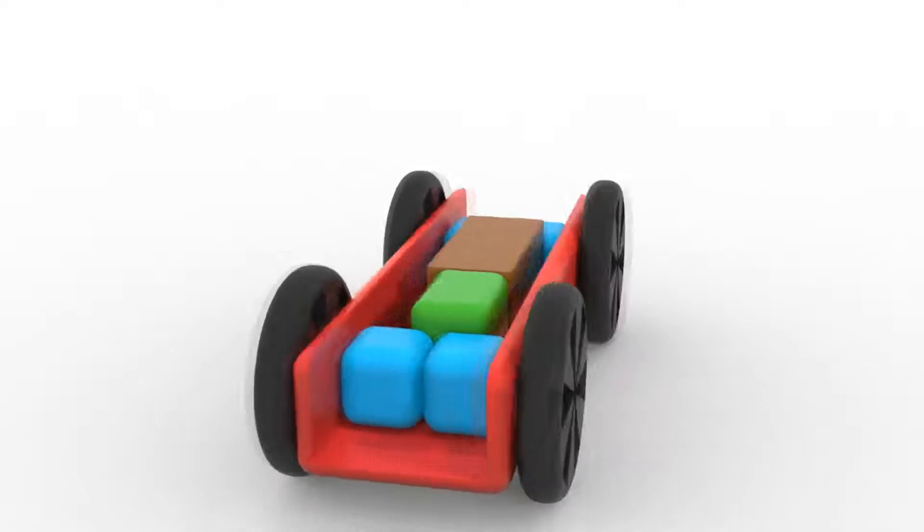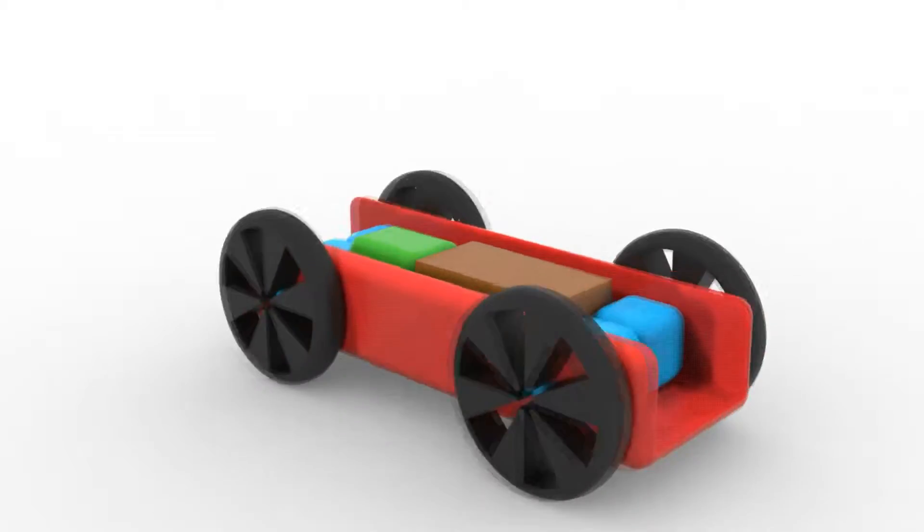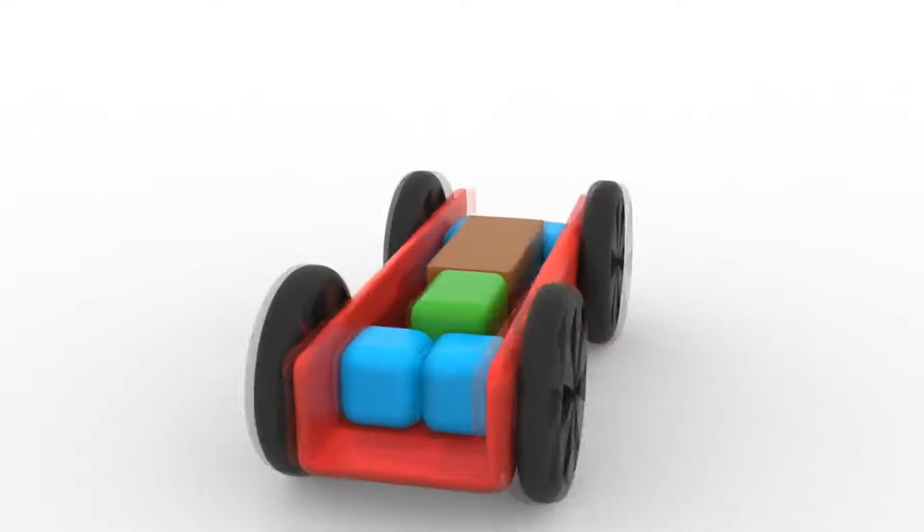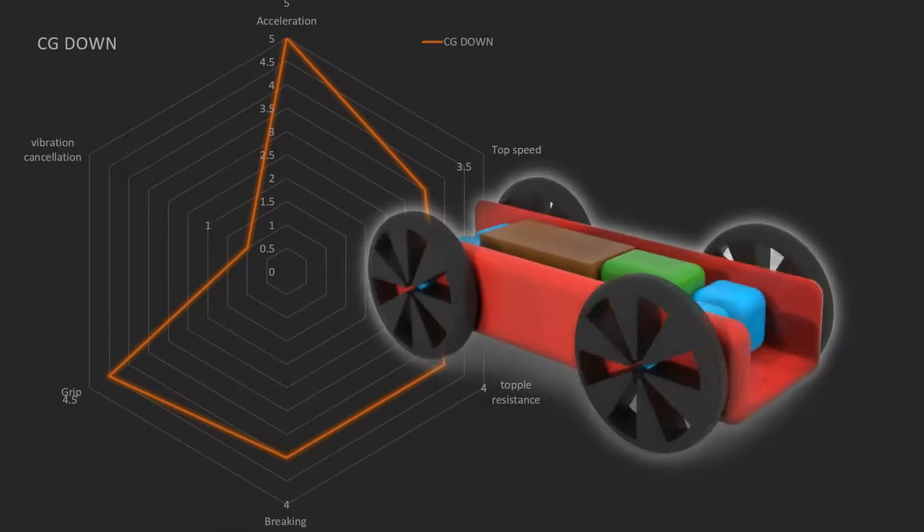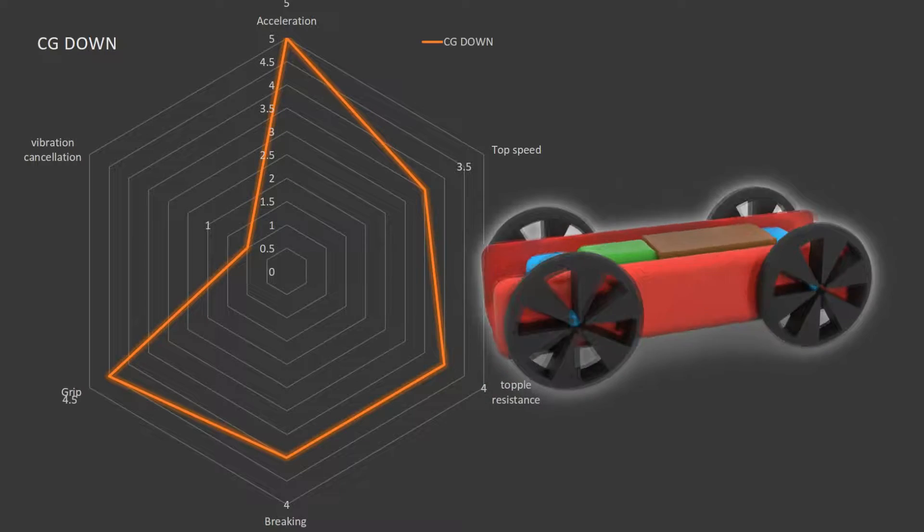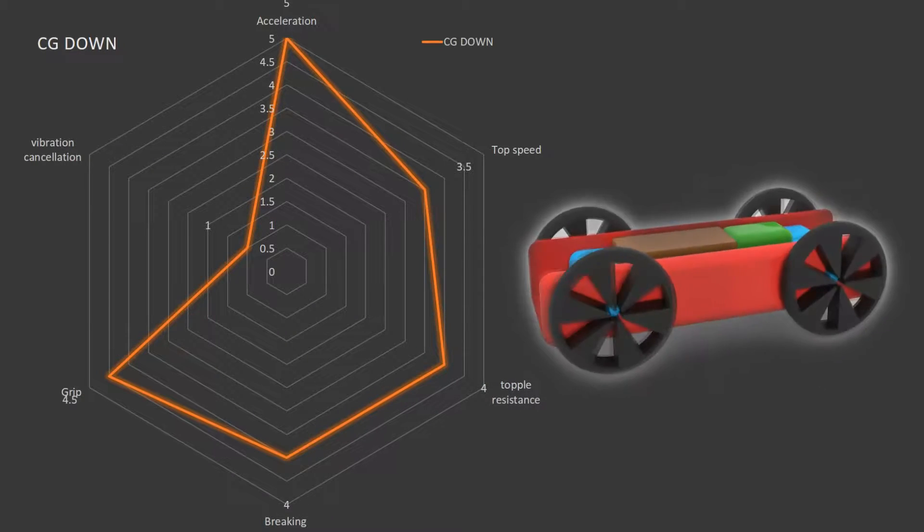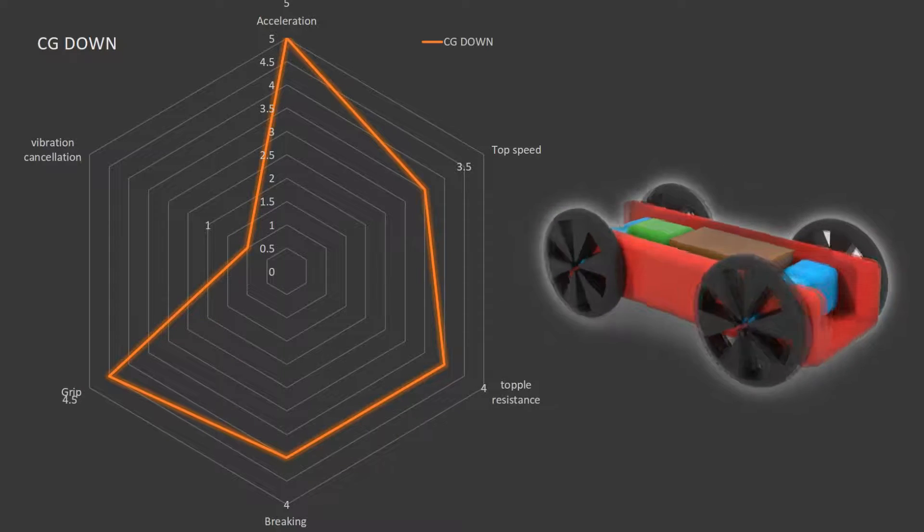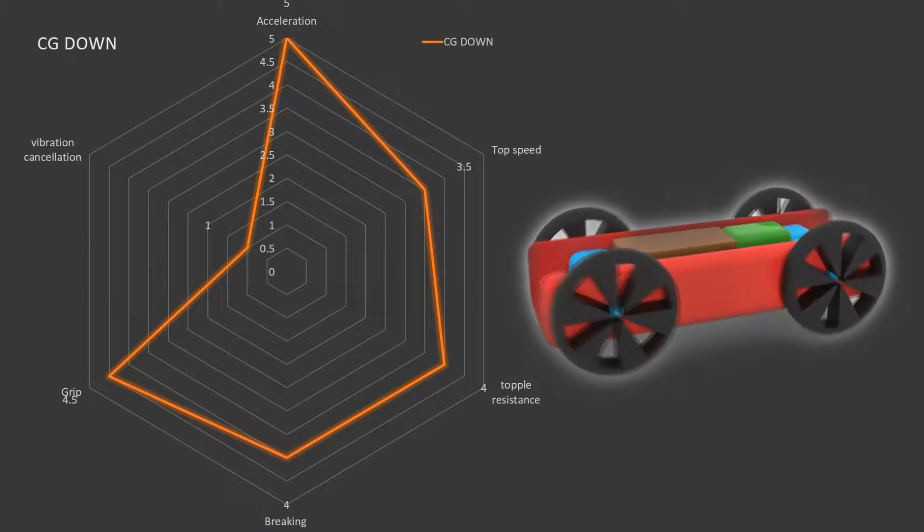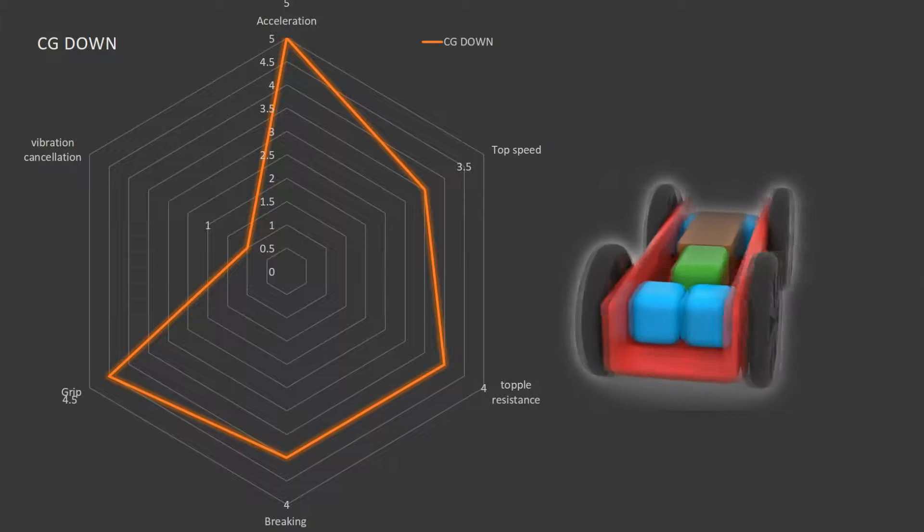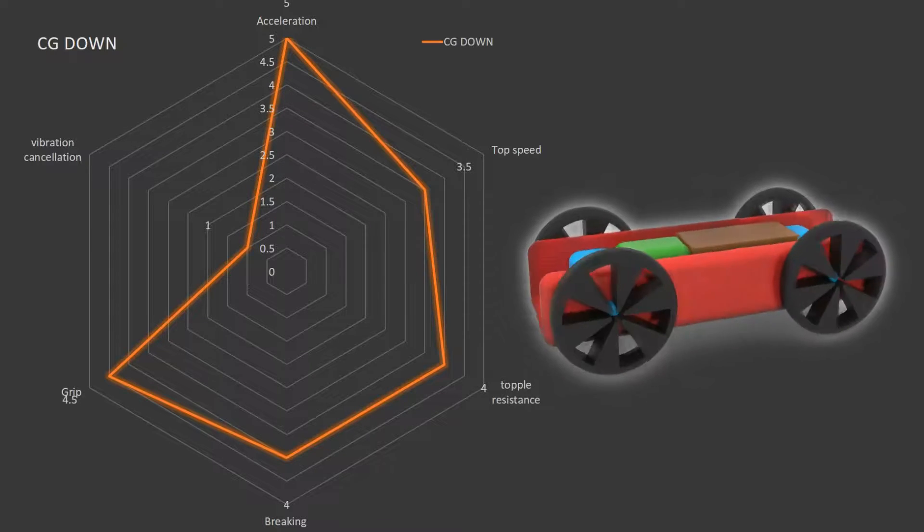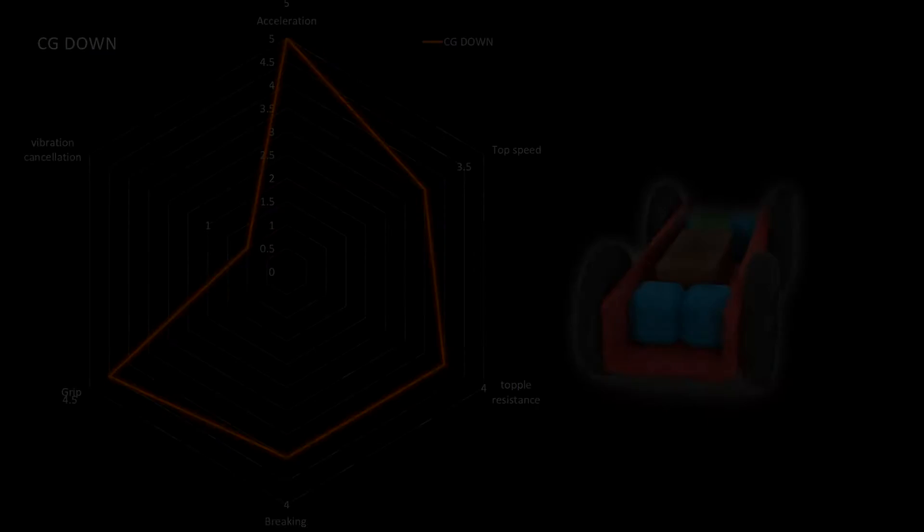Next in our list, we have a bot which has very low CG. In this style of robot, the battery and the circuit is kept very low and closer to the ground. Due to that, the achievable acceleration of the robot is very high, and grip to the road is also quite significant. Due to the grip, the braking is also strong and the topple resistance is also less. And the top speed is also appreciable. But all these factors lead to one problem: the vibration cancellation of the robot becomes very less, and the robot vibrates due to disturbance on the road.